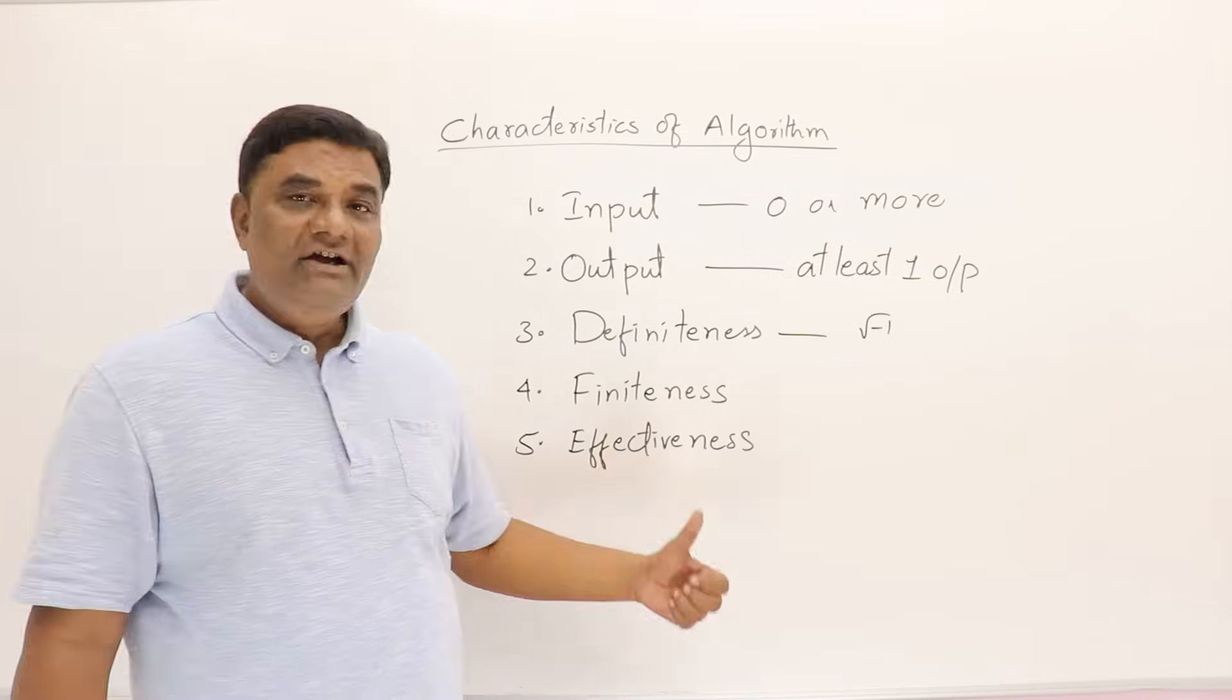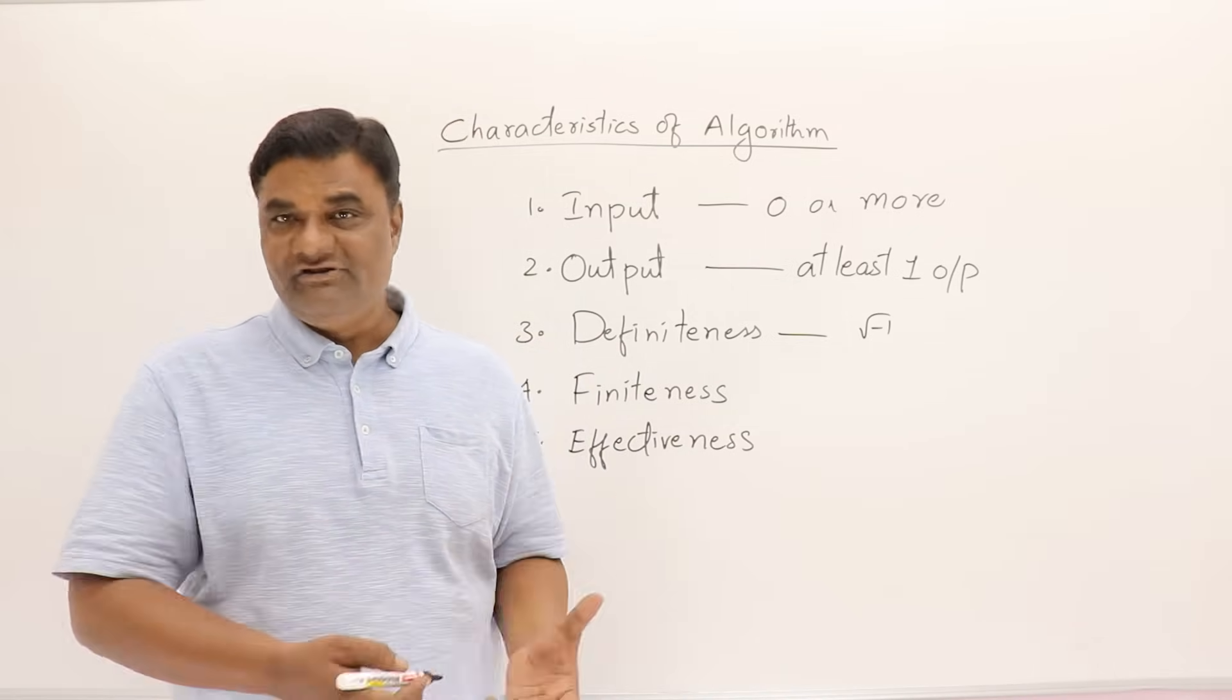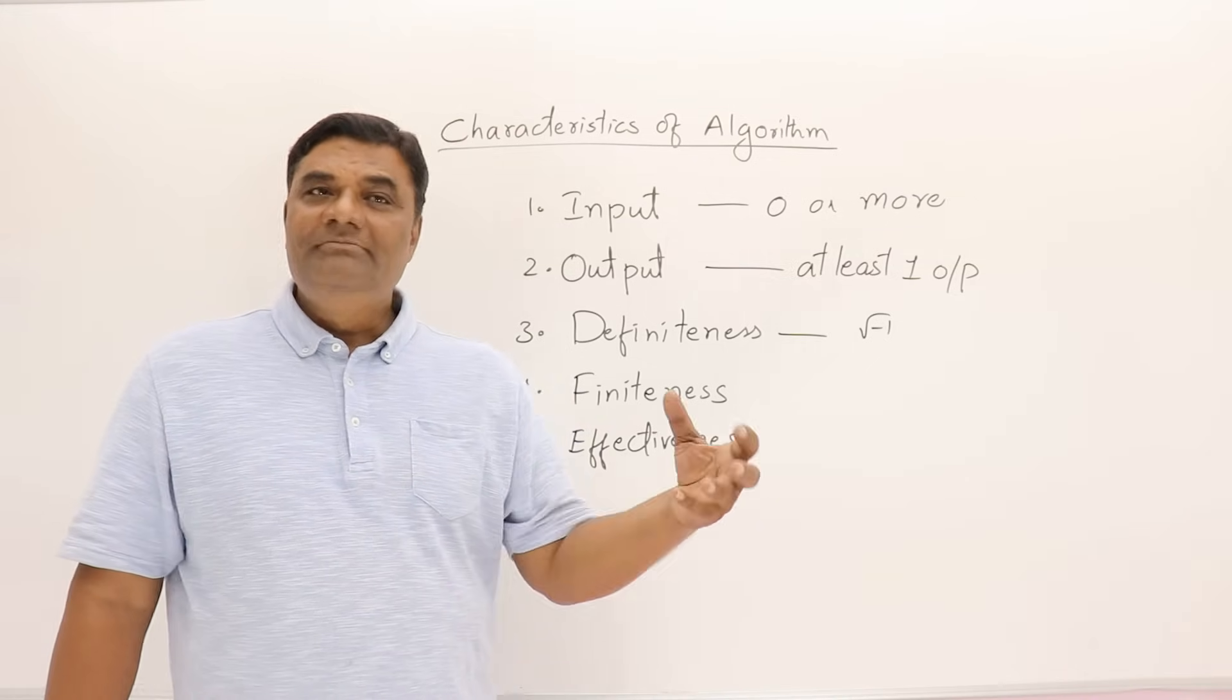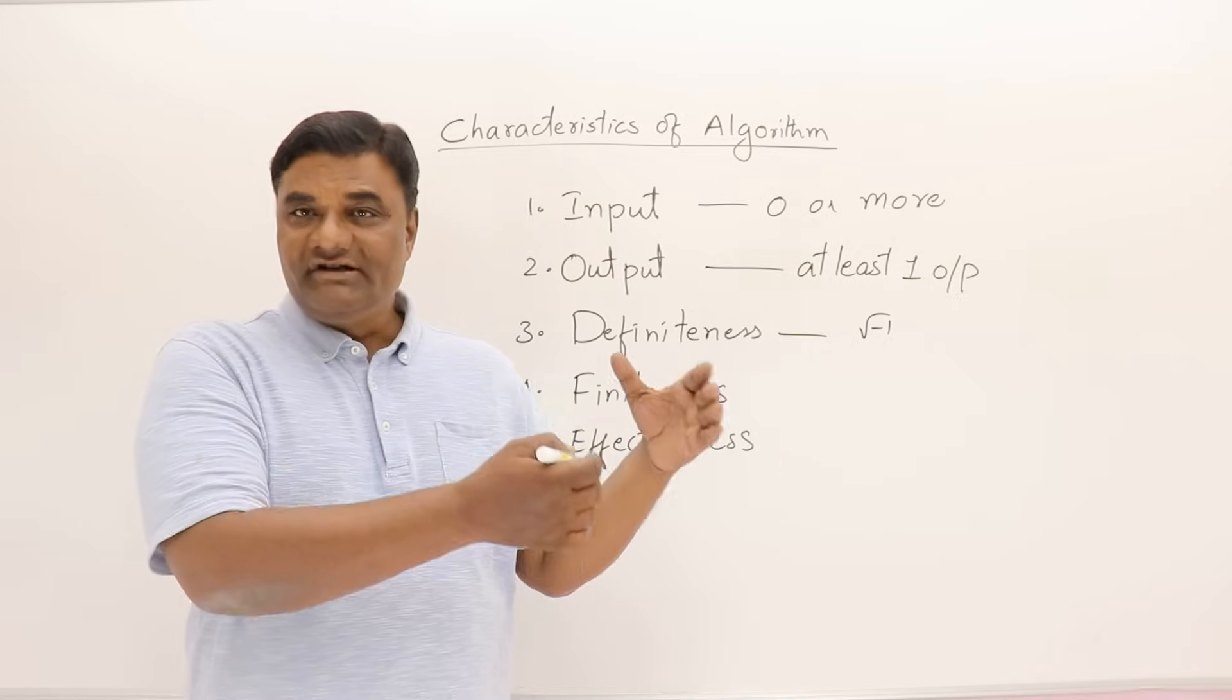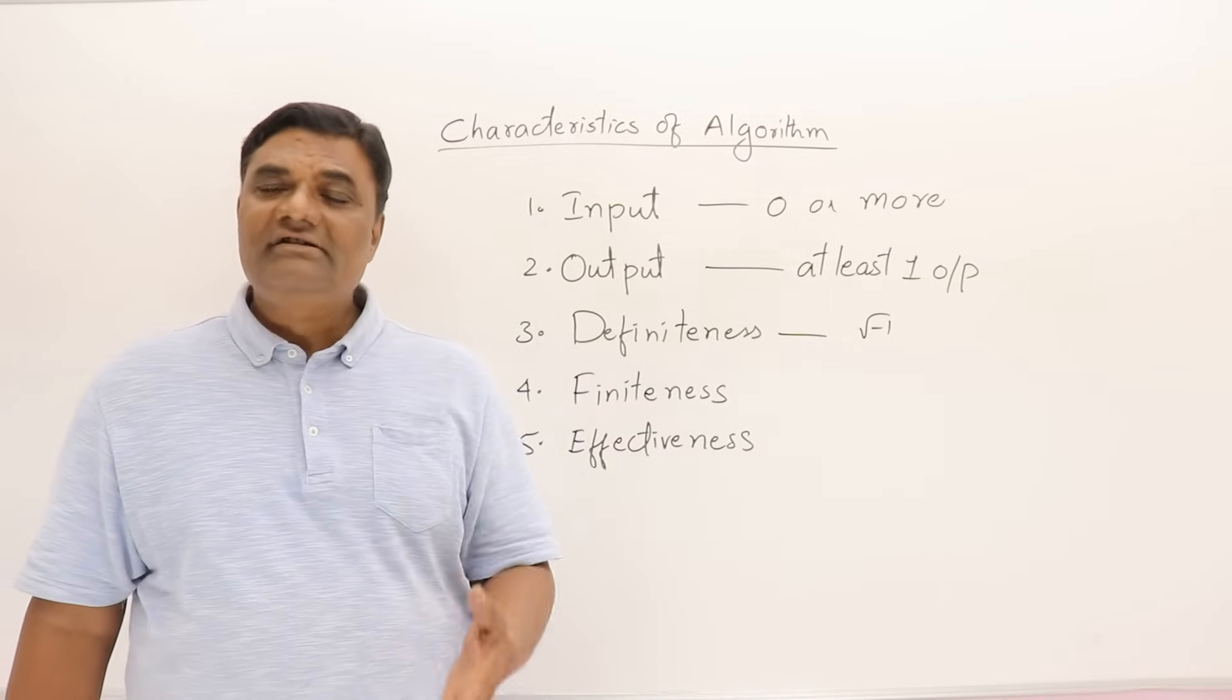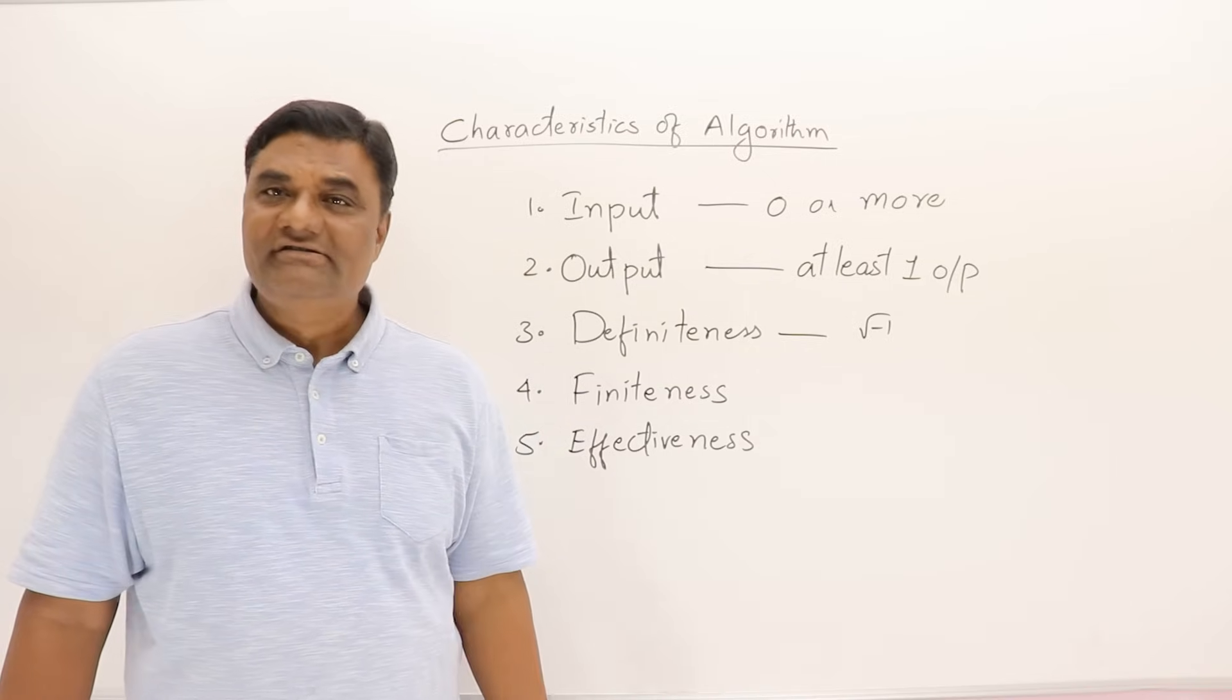And effectiveness—you will not do anything unnecessary while doing this procedure. Like, you are boiling some chemical but you're not using it in the experiment, it's not mixed with the solution. You are getting some vegetables in the recipe but that is not used in the dish. So unnecessary things are not done in the procedure. Here also, in the algorithm, you should not have any unnecessary statements.